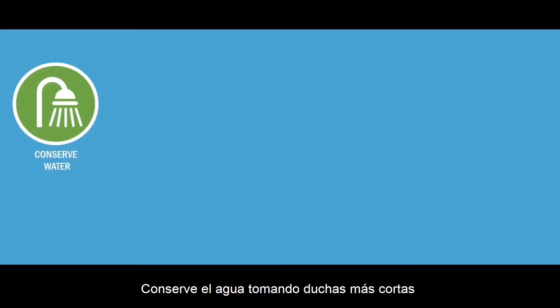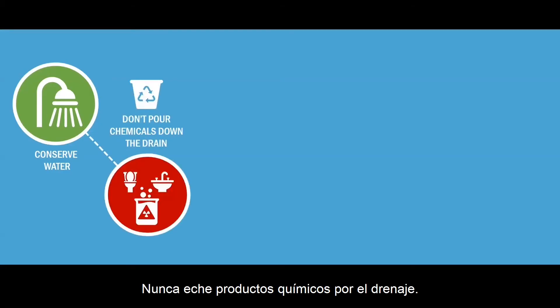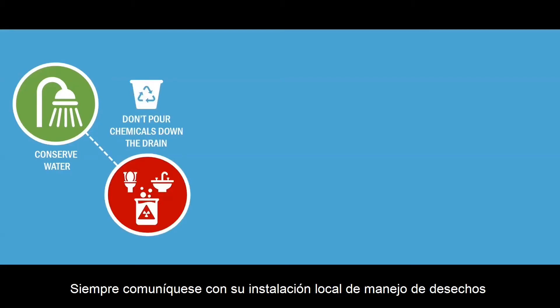Number one, conserve water by taking shorter showers or turning off the faucet when you're not using it. Number two, never pour chemicals down the drain. Always contact your local waste management facility so that they can help you dispose of them properly.